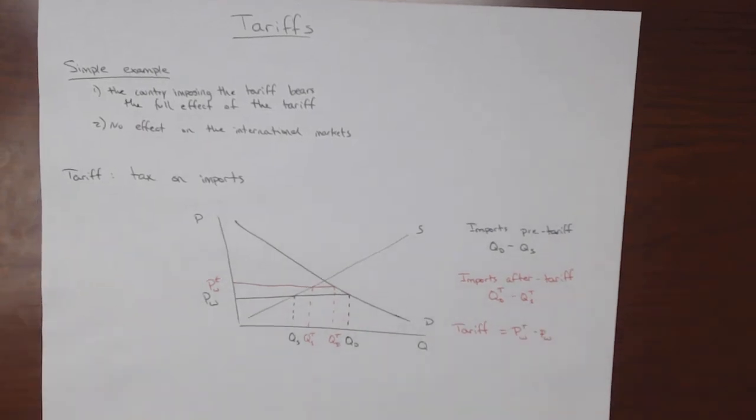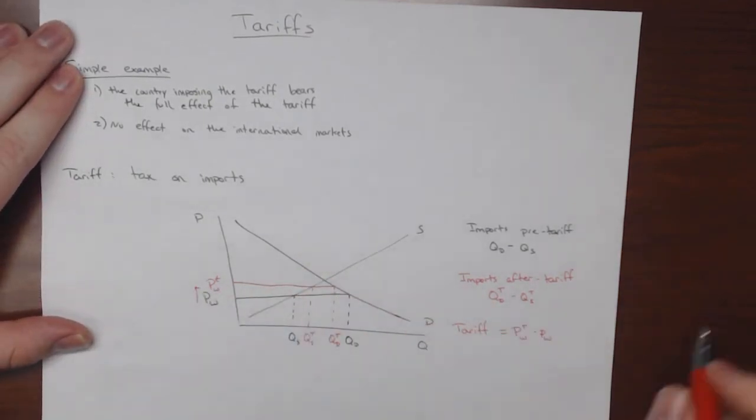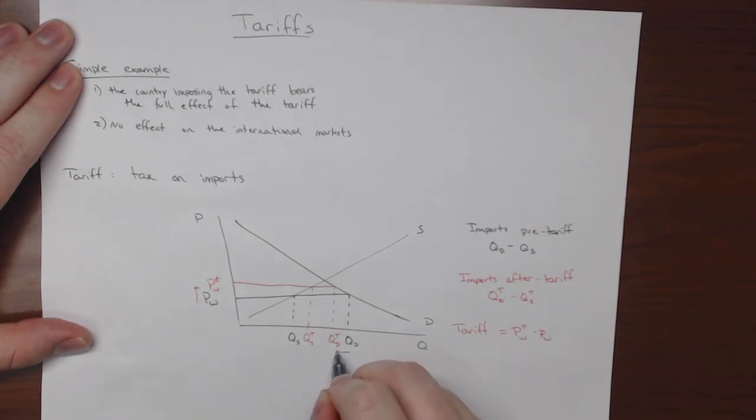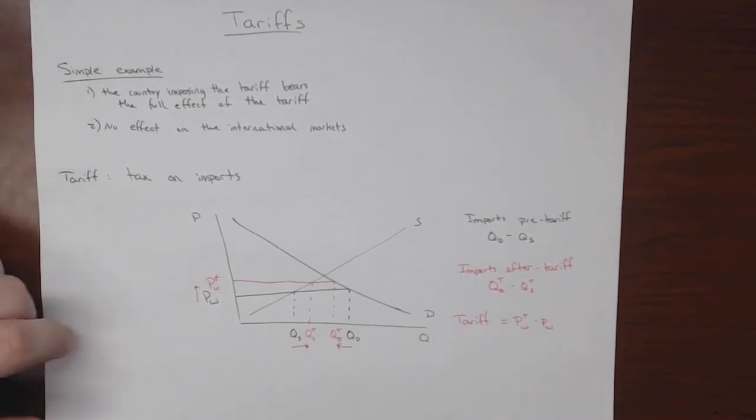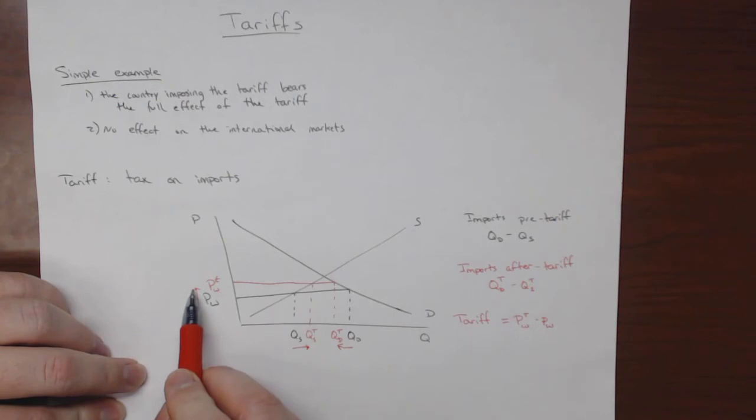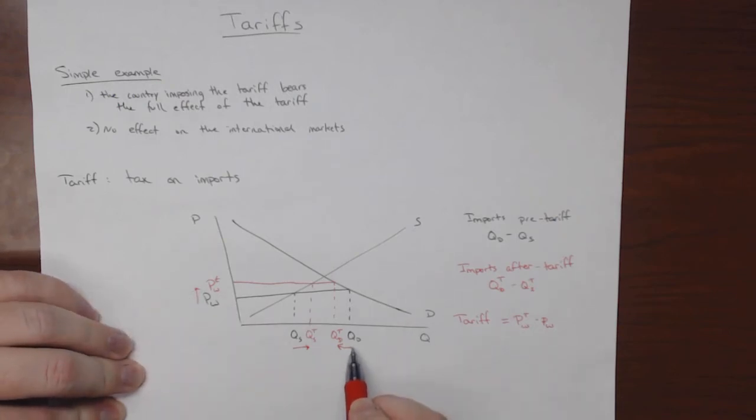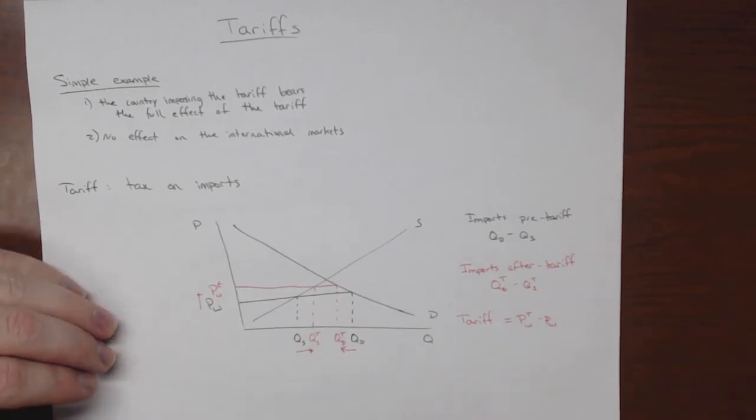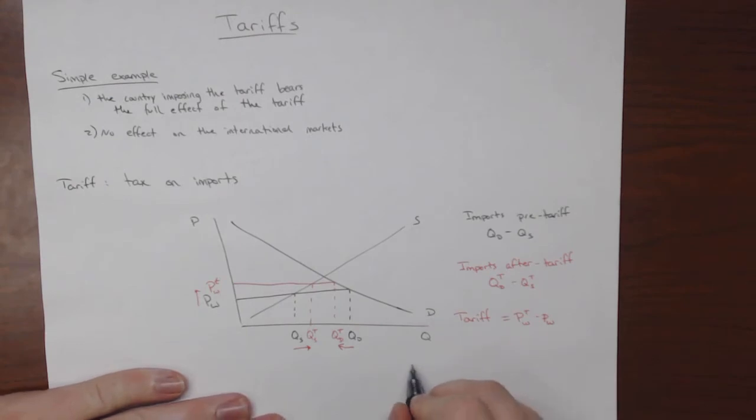So what we've got is the increase in the price due to the tariff. We have a decrease in domestic consumption because of the tariff, but we also have this increase in domestic production because of the tariff. And so we have three effects going on. The domestic price that people are paying is going to go up. As a result, domestic consumers will buy less, but domestic producers will produce more. And so what happens is, predictably, the number of imports goes down. So imports decrease.